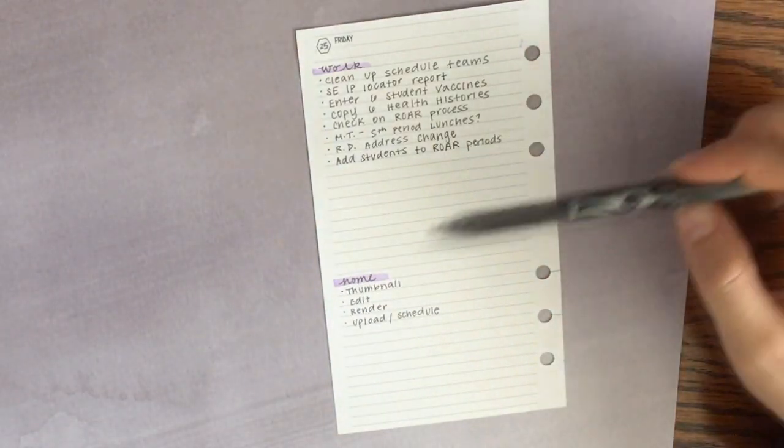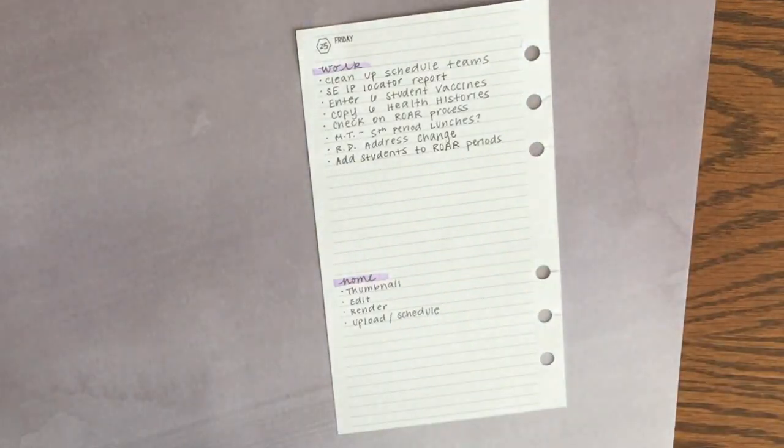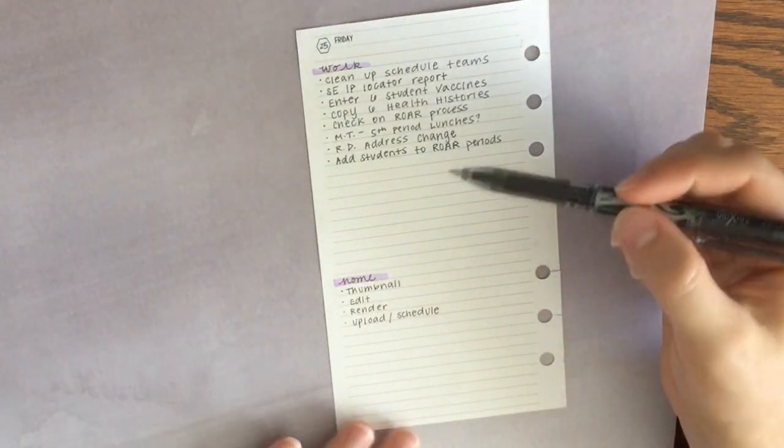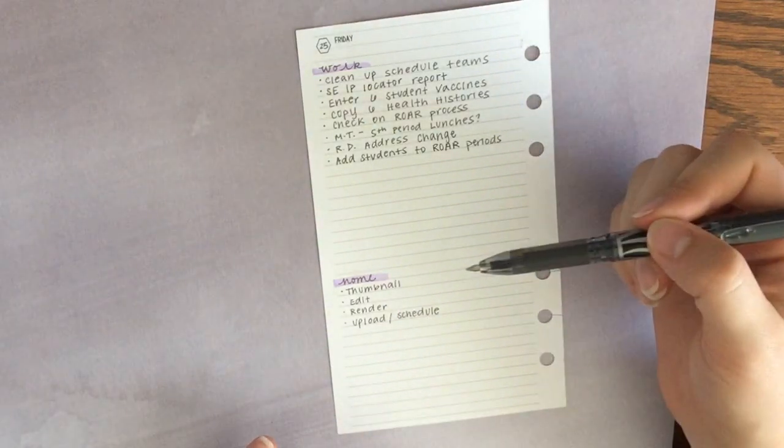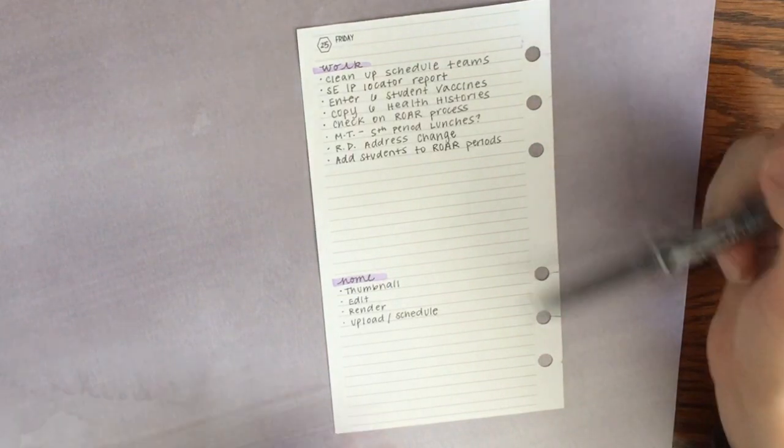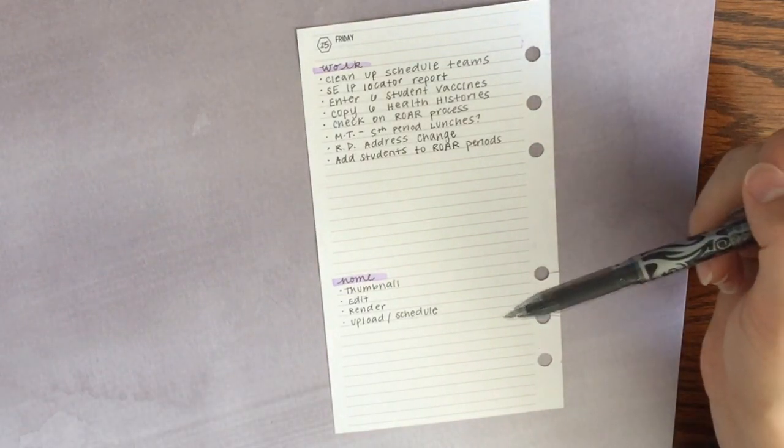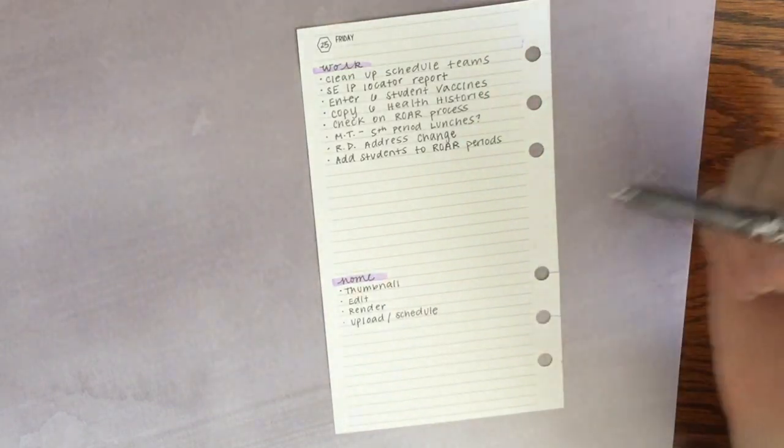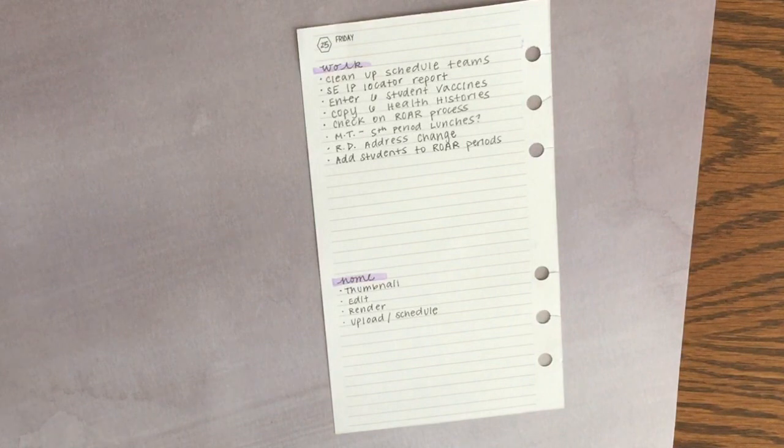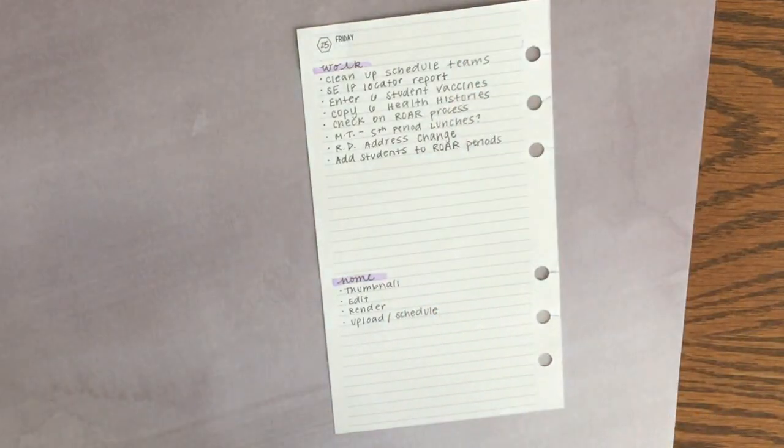I never want to reach a point where I'm like, what do I do next? I don't ever want to have that trip up of just being stuck and having to think about what's the next thing on my list, what's my next priority. I like to put as many priorities down as I can, and then if I don't quite get to them all, then I'll have to move them to the next day. But this way I've always got the next thing in line ready to go.